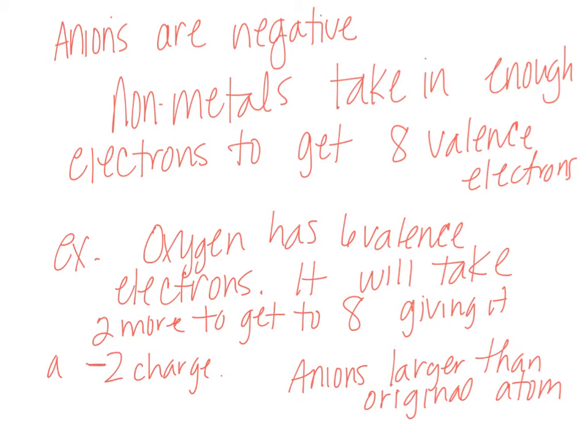The anions are negative, and what happens in an anion is a non-metal has taken in electrons to get to their 8. Our example here is oxygen normally has 6 valence electrons, it's trying to get to 8, so it will take in 2, and when it does that, since it has 2 extra electrons, which are negative, it gives us a negative 2 charge. To use the weight analogy, when I gain weight, I get bigger, so when I gain electrons, the atom gets bigger, so the anion is actually larger than the original atom.